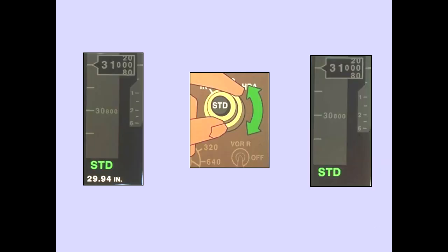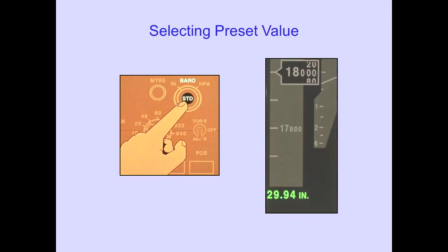With standard selected, a barometric pressure setting can be pre-selected by turning the barometric control. The preset value is displayed below STD. Pressing the standard switch with the preset value displayed selects the value as the current barometric pressure setting.